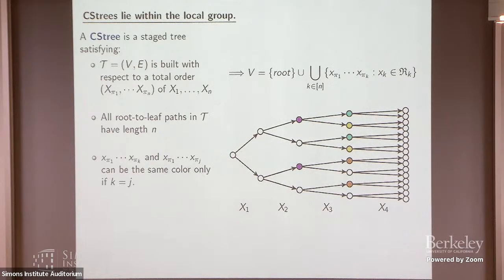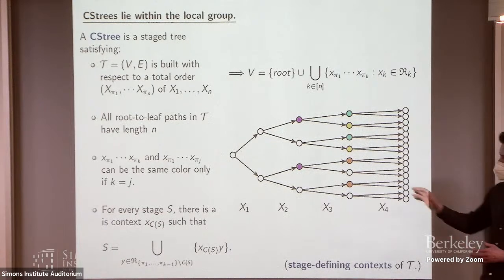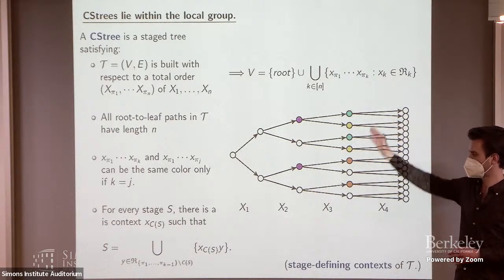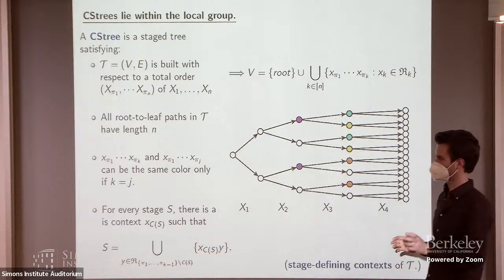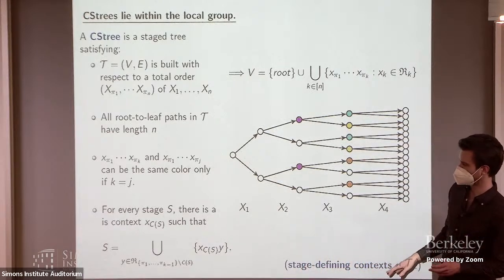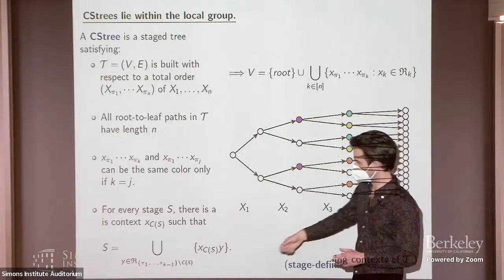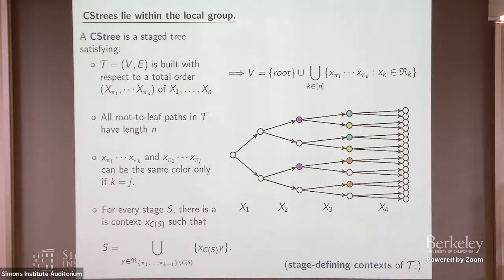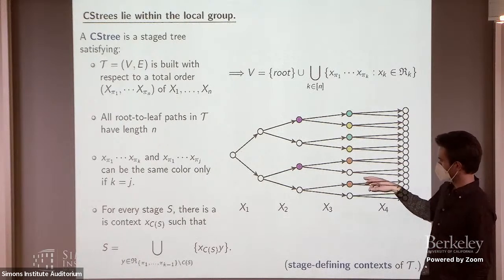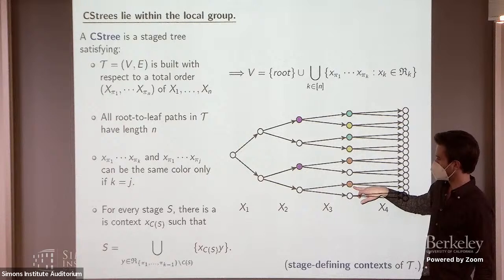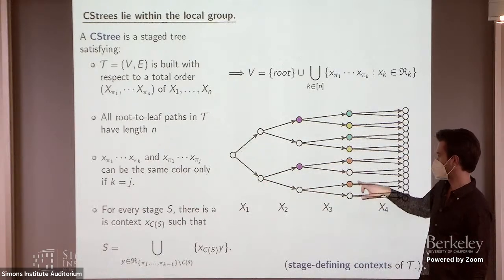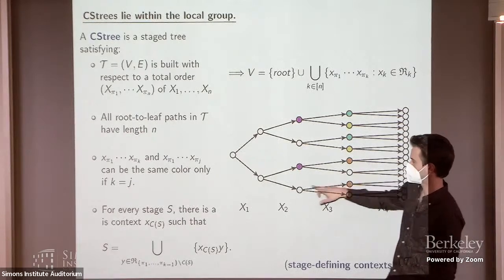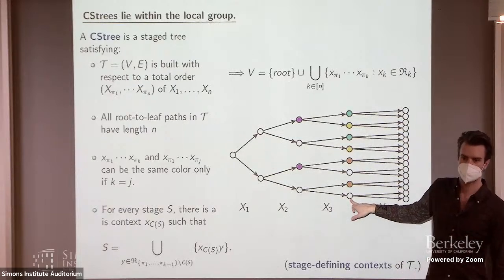Perhaps the most critical property is that for every stage at level k — a realization of the first k variables — they all contain some common sub-context, say XC, which we call the stage-defining context of the tree. The stage itself then has to be defined by allowing all other variables corresponding to that level to vary to their different possibilities. So for example, this orange stage corresponds to all realizations of x1, x2, x3 where x1 is 1 and x2, x3 is 0. If we wanted to include another node, the only common sub-context would be x1 is 1, so we'd have to include additional nodes too — a kind of swallowing property.